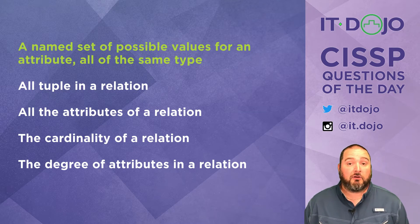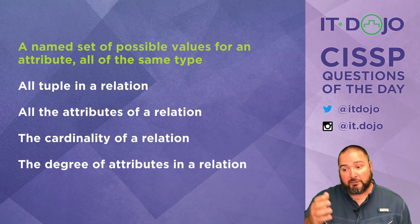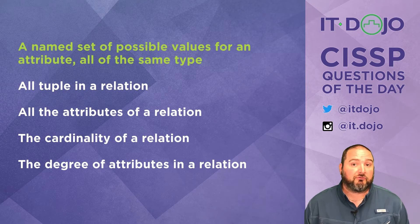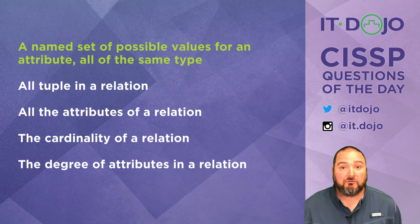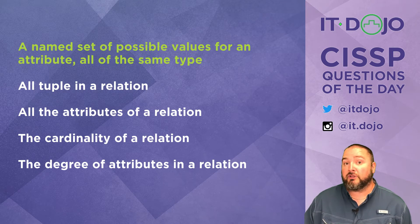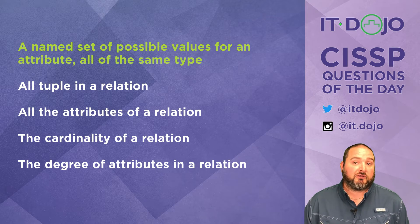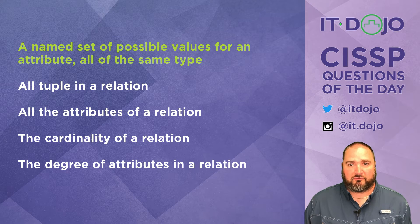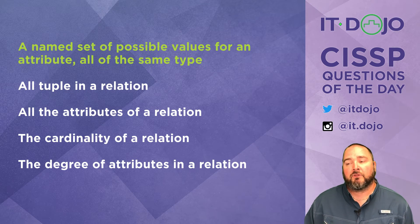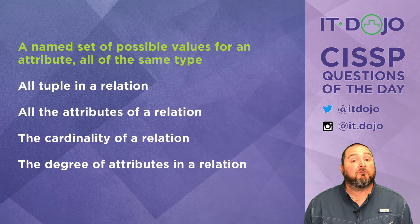Other terminology we want to make sure you know: all of the tuples in a relation — a tuple is analogous to a row. A relation is a table. So relation equals table, tuple equals row, and attribute equals column. All the individual attributes of a relation means all the columns in a table. The cardinality of a relation simply means how many rows there are in a table, and the degree of attributes in a relation is the number of columns in a particular table. Super fancy words to describe things most of us know from day-to-day interaction with something as basic as Microsoft Excel.